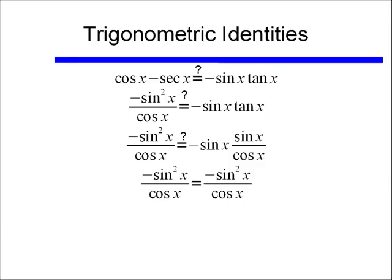They're both equal to negative sine squared x over cosine x. So this identity is true. And this is how you'll solve any types of problems like this. You'll look at each side separately and see if there's anything you can do to manipulate using our trigonometric identities to get the left hand side and the right hand side equal. And if they are not equal, if you cannot get them equal, then the identity would be false.